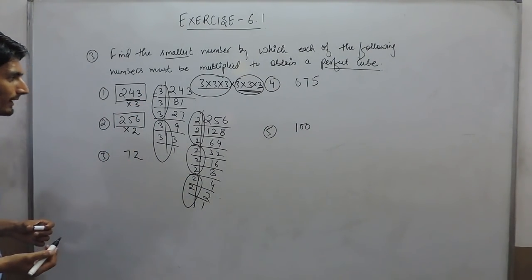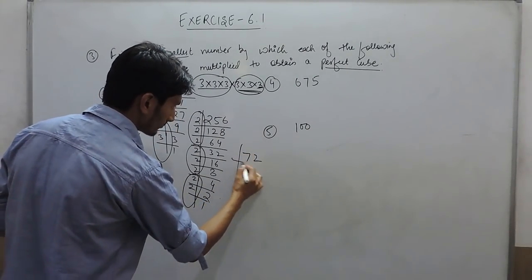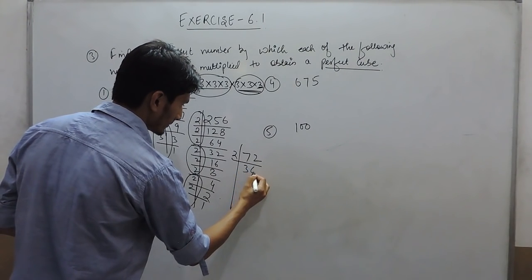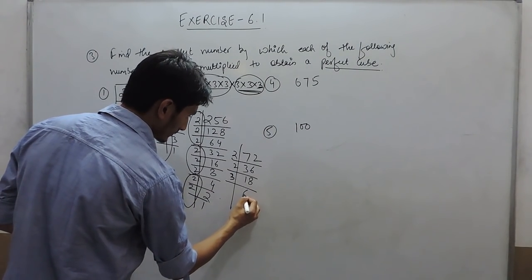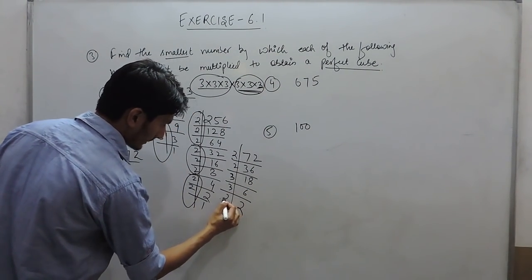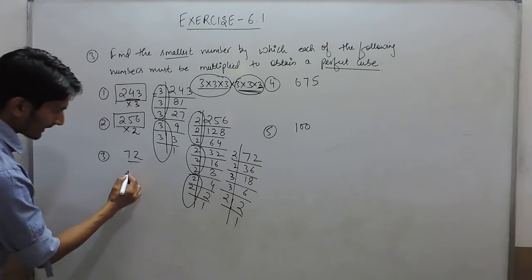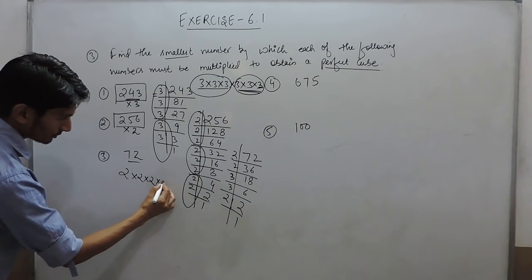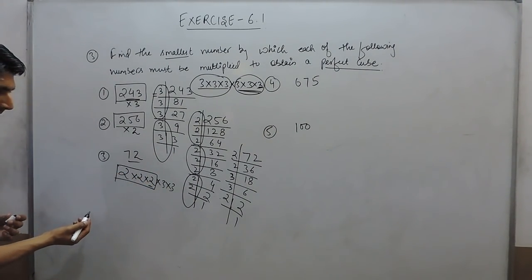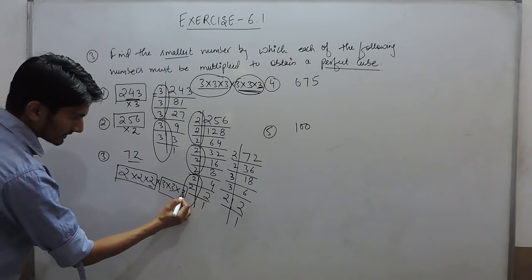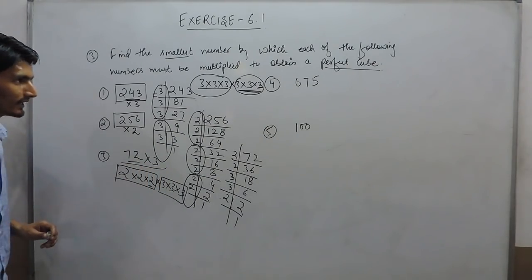Again when we do the prime factorization of 72, dividing by 2 we get 36, then by 2 we get 18, then by 2 we get 9, then by 3 we get 3, and by 3 we get 1. So we can write it as 2 × 2 × 2 × 3 × 3 × 3. We have one group of 3 for the 2s, but one number is missing in the group of 3s. So to complete the group of 3, we have to multiply this with 3 to make it a perfect cube.